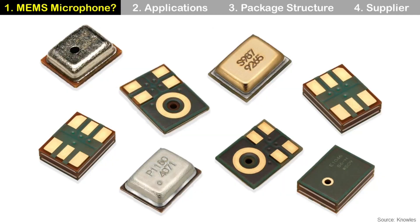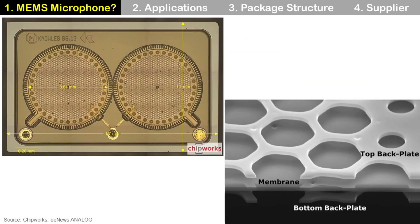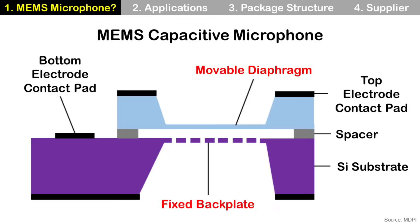MEMS microphone has different shapes and structures. If you zoom in on the MEMS microphone die inside the package, you can see the detailed structure of the MEMS die. In most cases, it is a capacitive microphone, and here is a cross-section to understand its structure.